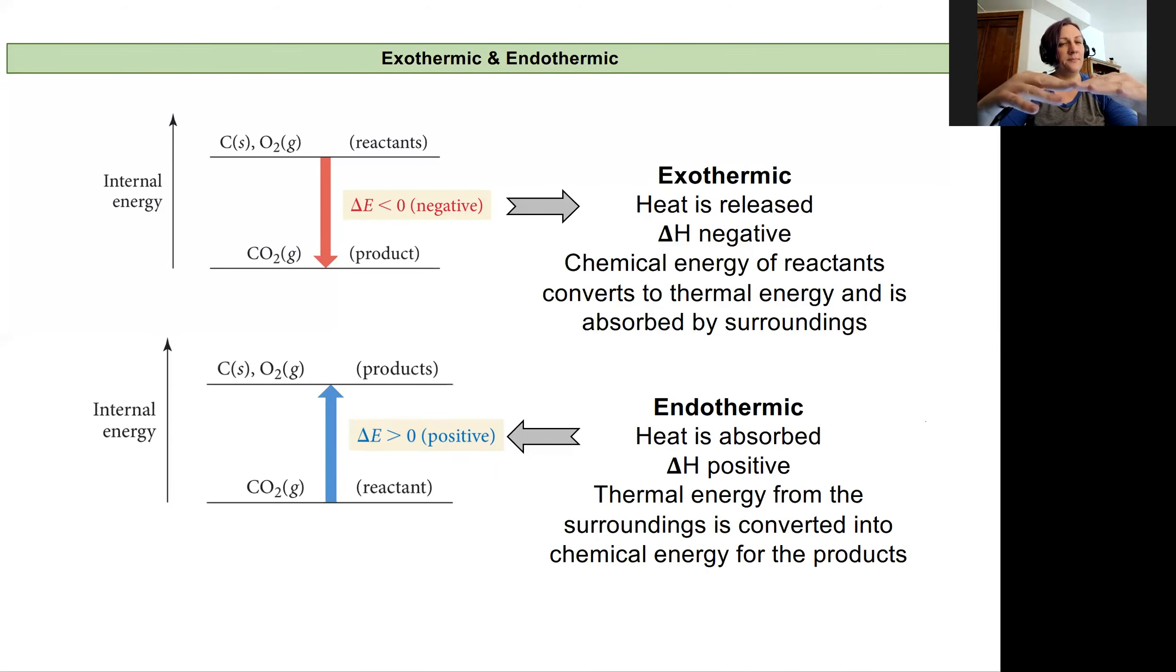And so because those products are more stable, there was this energy that was tied up in our reactants that we don't need anymore. And it's released out into the environment. So that gives us this released heat gives us an enthalpy that's going to drop because energy is lost from the chemical reaction, which we view as the system into the surroundings, which could be the solution it's dissolved in or the beaker or the gas around it. We're going to see that loss of heat and energy as a negative enthalpy.